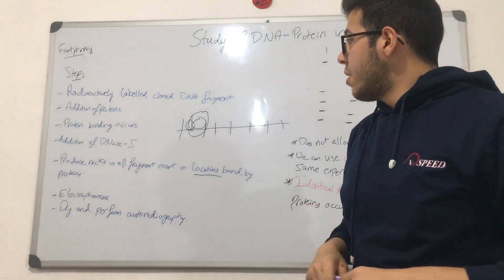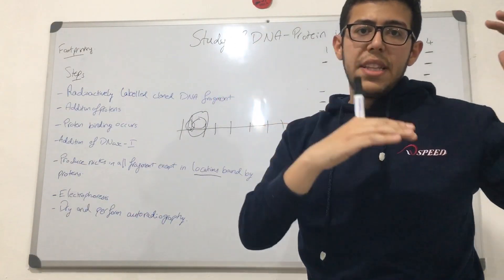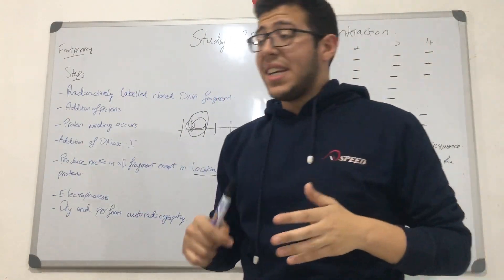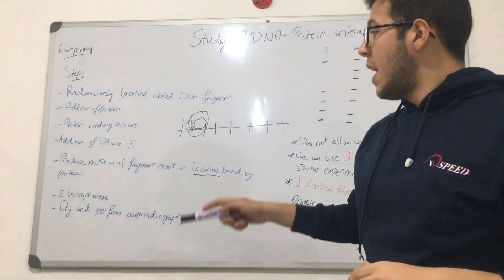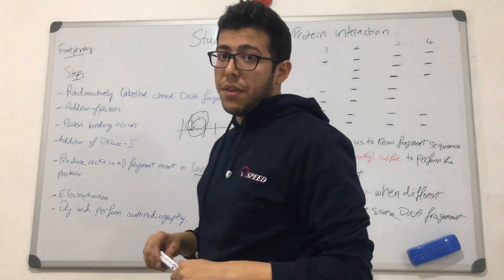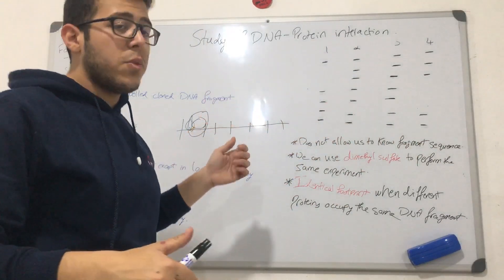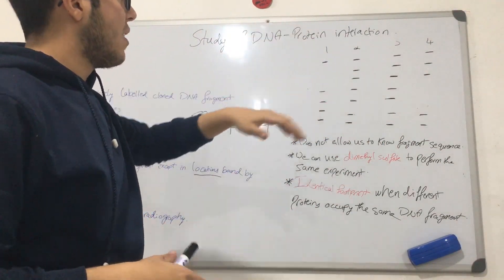Just like it's written here, we're going to be performing electrophoresis to separate the DNA fragments depending on their sizes, and then we're going to be drying this sample and performing auto-radiography. Since we labeled them before, we can visualize them.